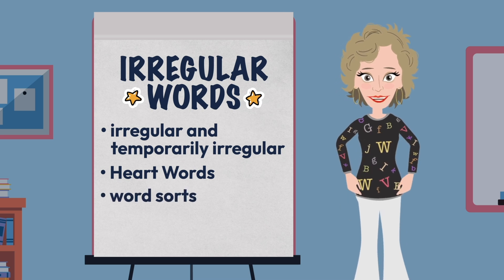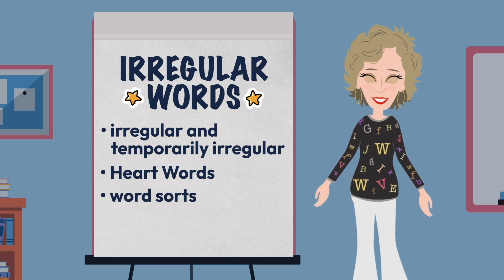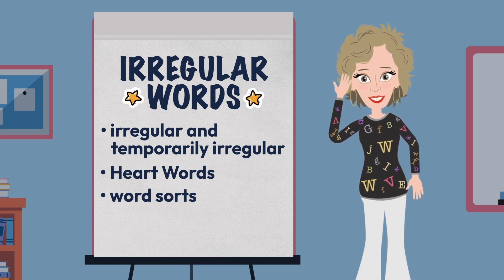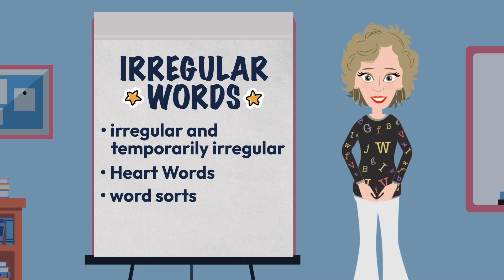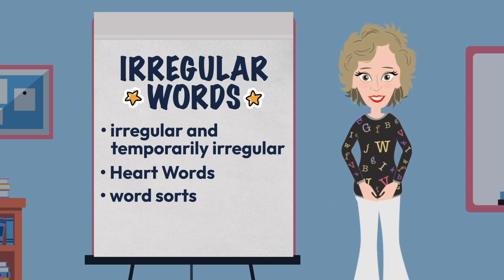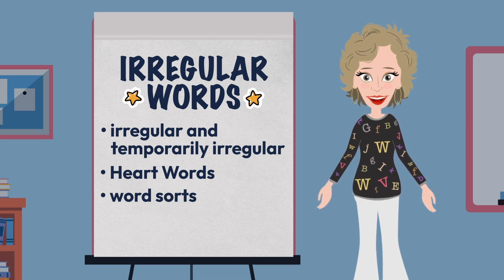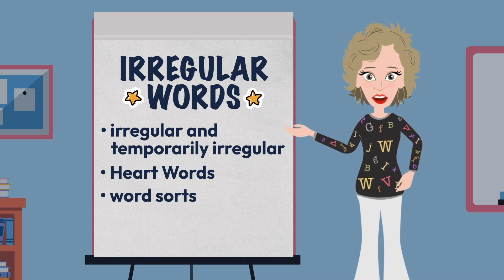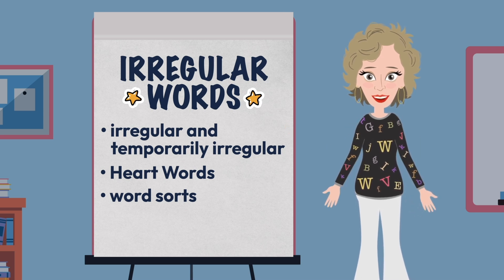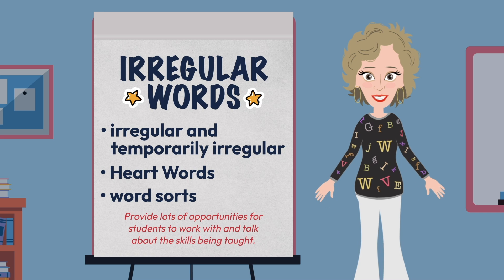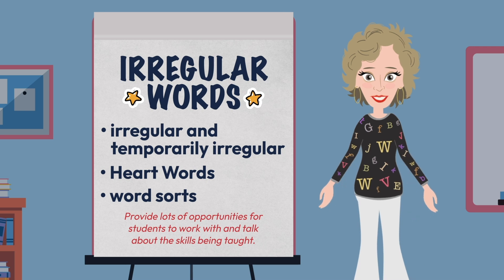Word sorts was the last strategy we talked about, and we got a good laugh about the fact that it didn't really fit under any one decoding or encoding practice, because the idea of sorting can be used for almost any skill. This is a great strategy for teaching decoding and spelling patterns. But teaching kids to categorize things by comparing and contrasting their characteristics will aid retention of many skills. There is a huge repertoire of strategies available through your curriculum and via online resources. The big takeaway from this lesson is not what you use, but that you provide lots of opportunities for students to work with and talk about the skills being taught.